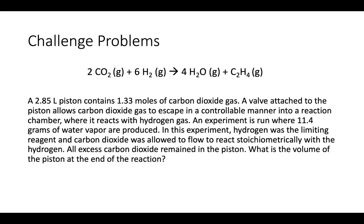So the first two are going to be our gas law questions. Here, you're told that you have a piston with carbon dioxide gas in it, and that this has a valve that allows carbon dioxide to escape in a controllable manner into a reaction chamber where it can react with hydrogen gas. An experiment you run where 11.4 grams of water vapor are produced, which would be gaseous water.